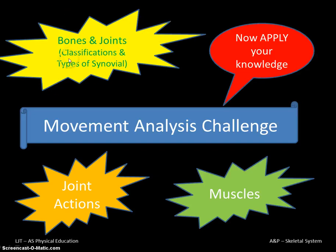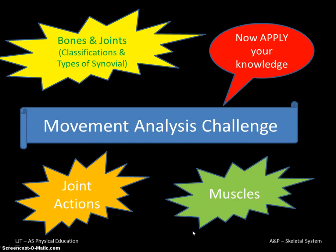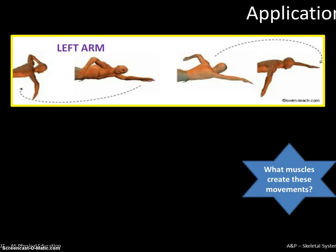Your bones and joints — names of bones, types of joints, classifications of joints, the movements that happen at synovial joints, and the muscle names — you need to be able to look at sporting actions, whether it's your own action or an exam question where they might give you a picture, and apply that knowledge and name everything. We're going to go through one example: the arm action in front crawl, looking mostly at the left arm.